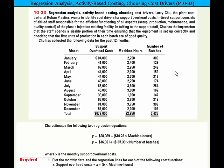Chu estimates the following two regression equations. Y, which is the support overhead cost — the dependent variable — is equal to $28,089 plus $1,023 per machine hour. Or, alternatively, he comes up with $16,031 as a fixed portion plus $197.30 times the number of batches, where Y is the monthly support overhead costs.